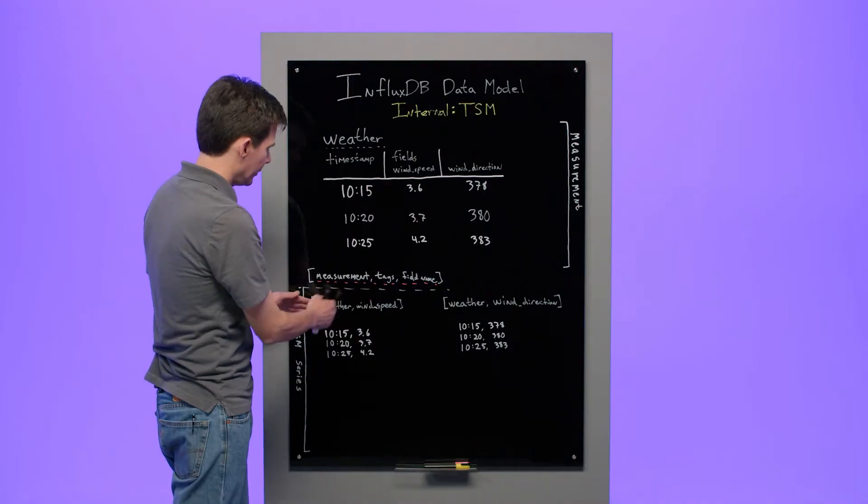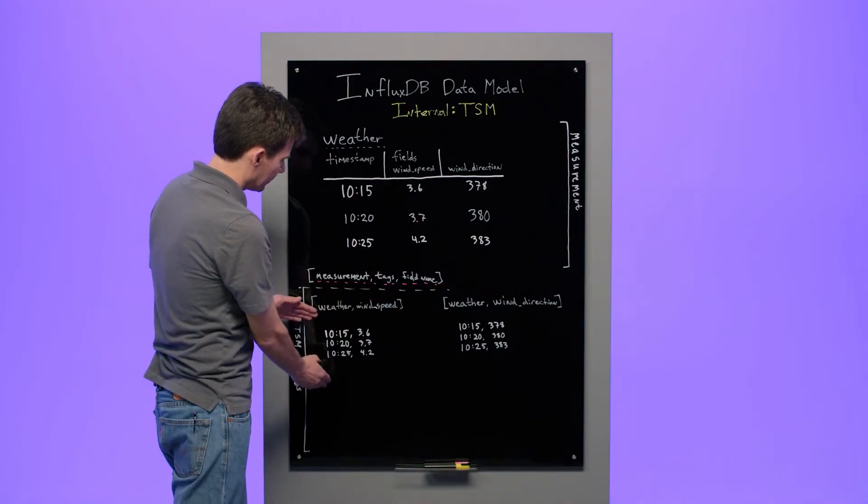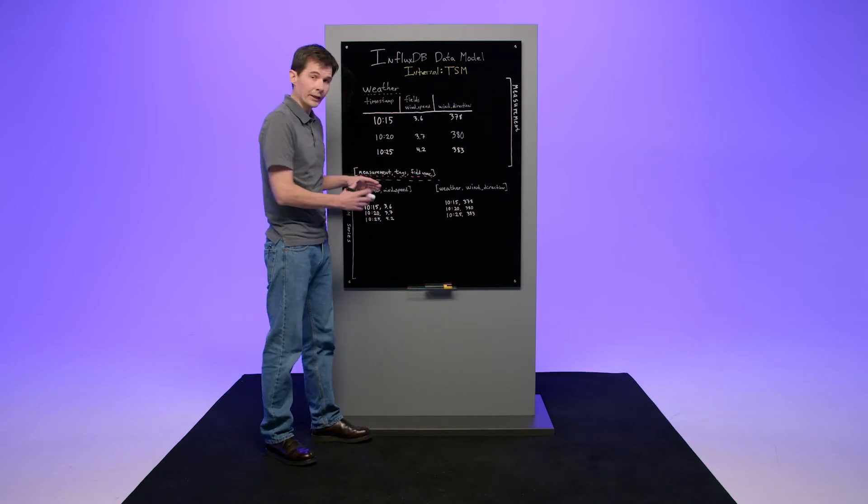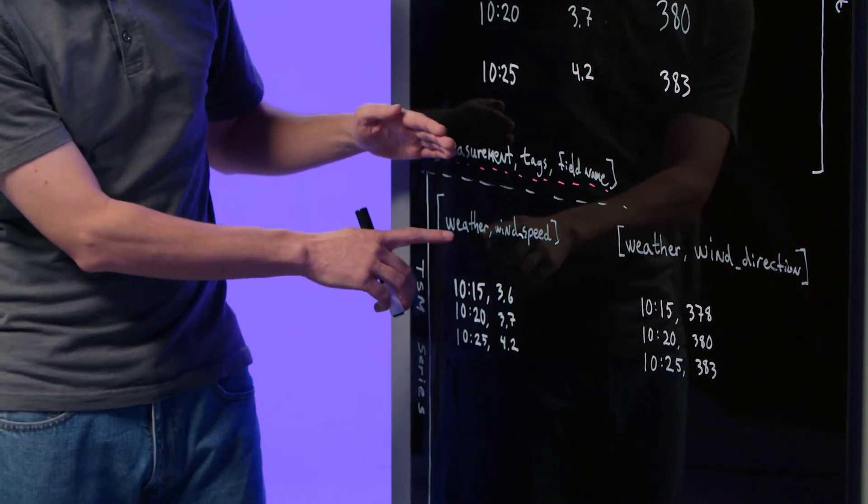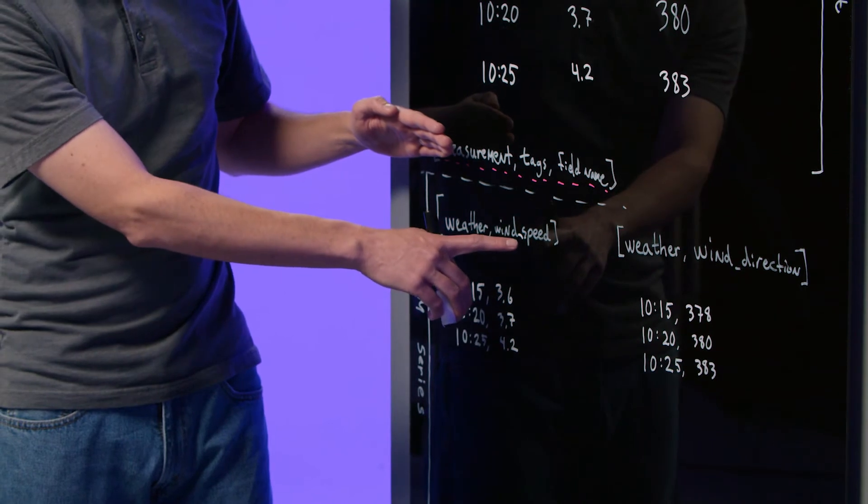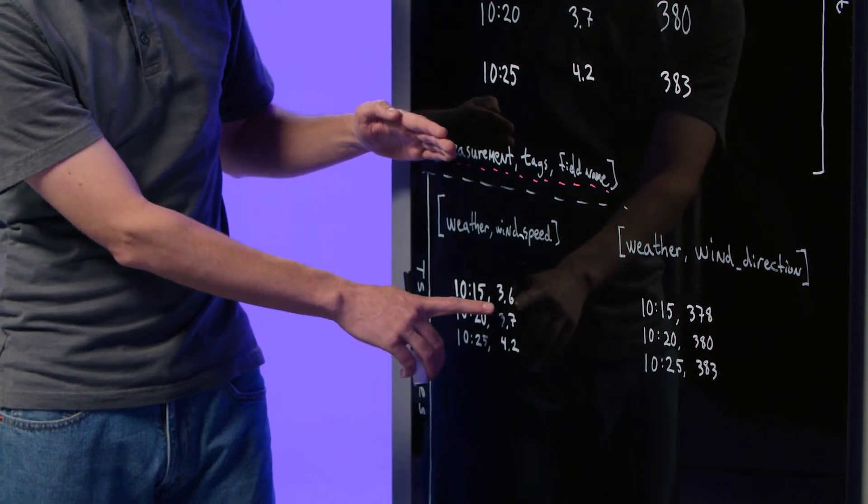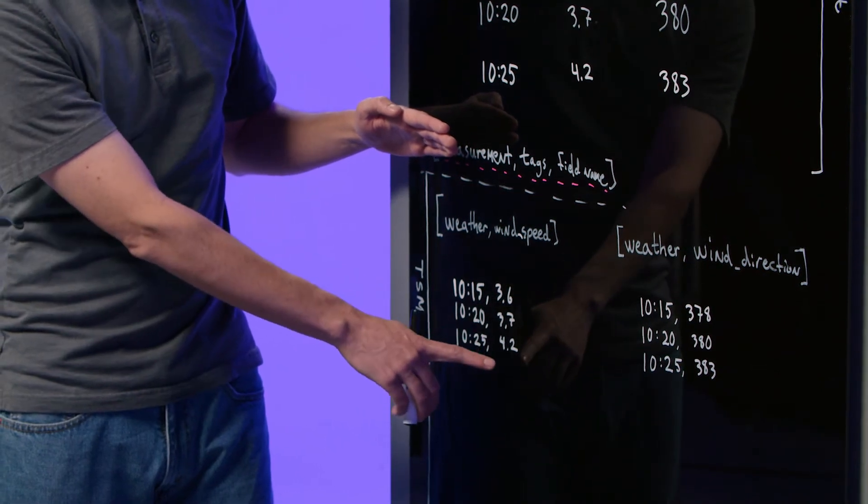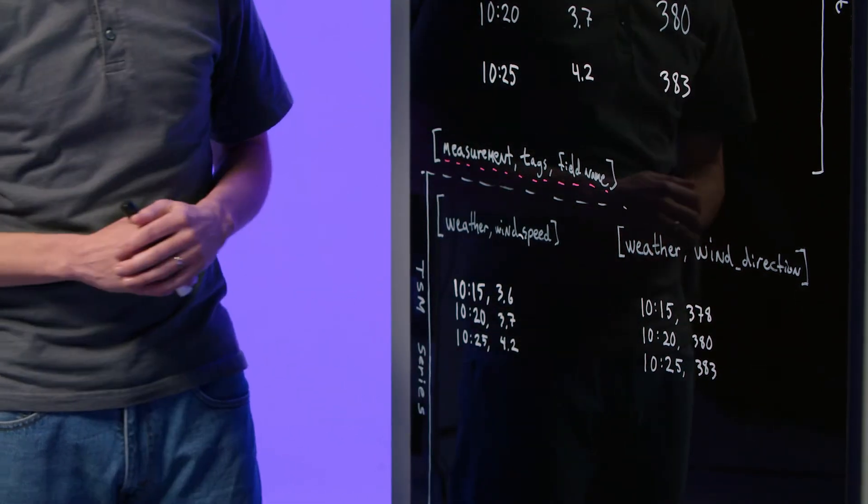The data for each of these series you can see below the key. In plain English, the way to read a series is like this: Measurement weather indicates that the wind speed was 3.6 knots at 10:15, 3.7 knots at 10:20, and 4.2 knots at 10:25.